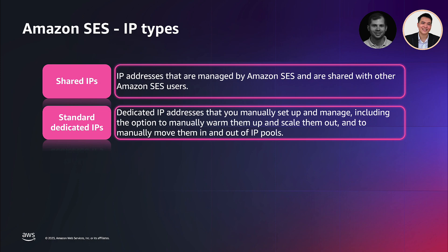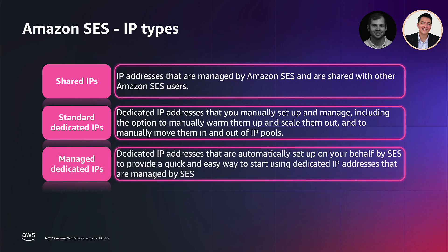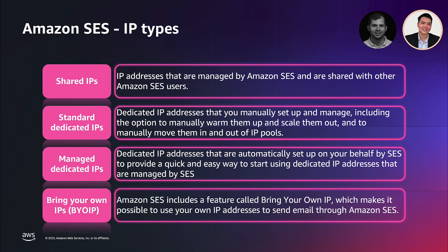This process is called warming up the IP address and it can take up to 45 days. This gradual increase helps your IPs build a positive reputation with mailbox providers. Managed dedicated IPs is an Amazon SES feature that automatically sets up and manages dedicated IP addresses on your behalf, providing a quick and easy way to start using dedicated IPs managed by SES, ensuring they are used efficiently and optimally. Last but not least, bring your own IPs makes it possible to use your own IP addresses to send email through Amazon SES if you already have a range of IP addresses.